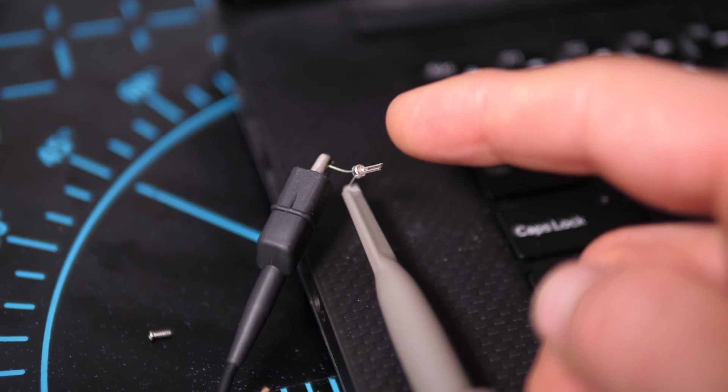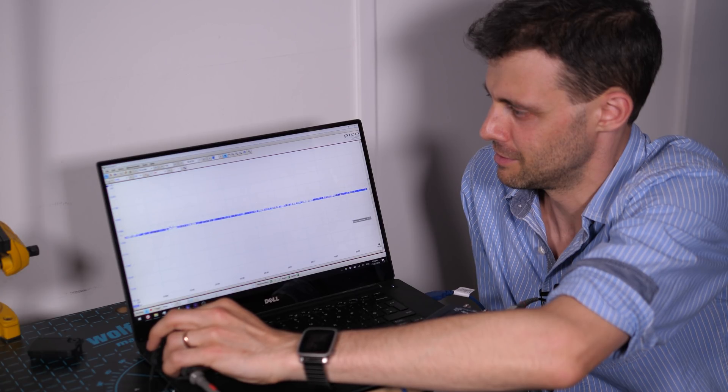The quartz crystal inside a quartz watch vibrates 32,768 times per second. In other words, a frequency of 2 to the power 15, and the circuit inside repeatedly halves that frequency.